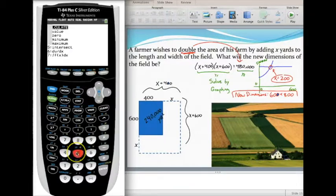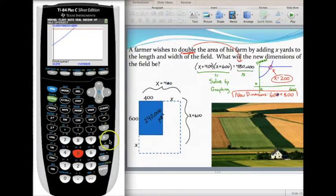Hit second and trace if you forgot where to find intersection. Option five is what I want. It's going to ask you three questions. You can trace and get close to that intersection point, or otherwise just hit enter three times for first curve, second curve, and guess, and it'll find your intersection point. So the solution to this is x equals 200. I should be adding 200 yards onto my field.